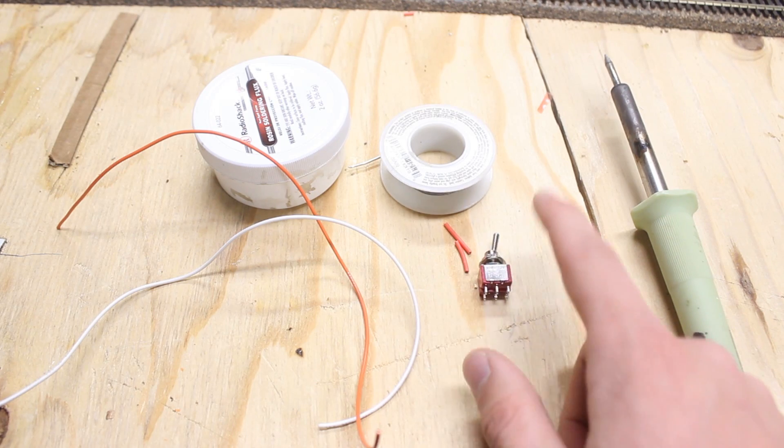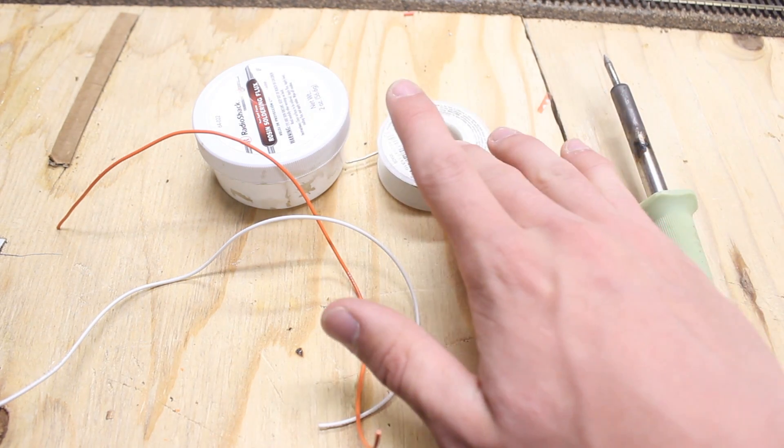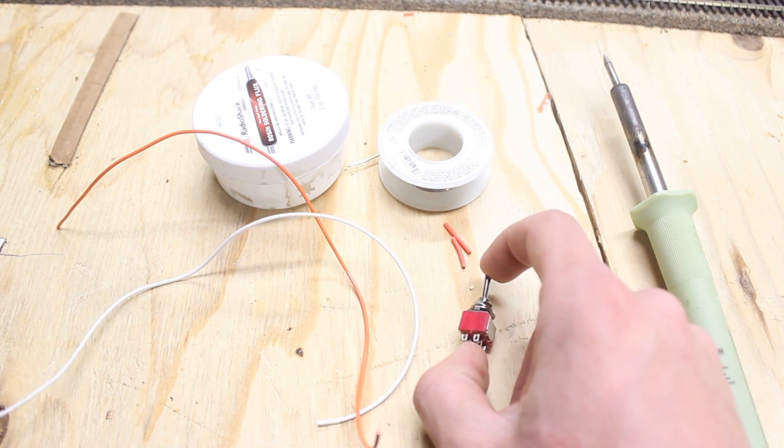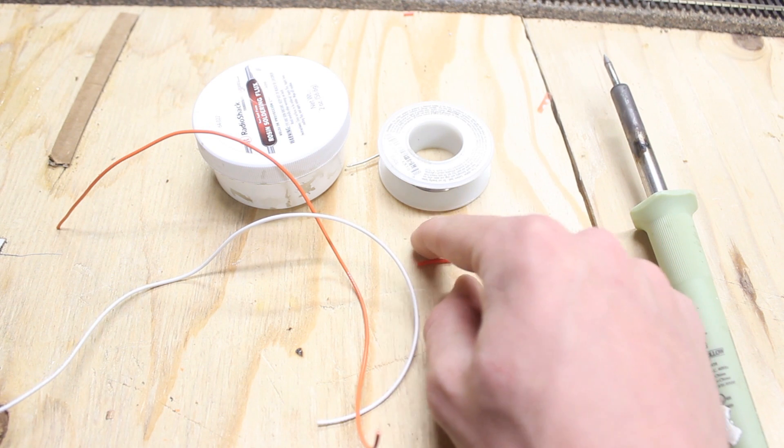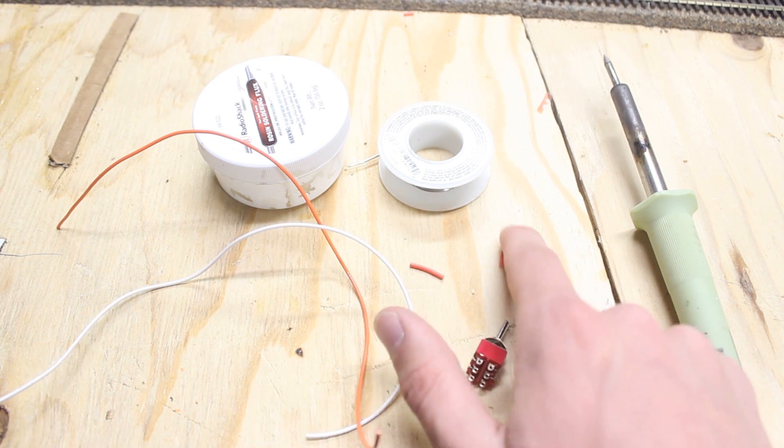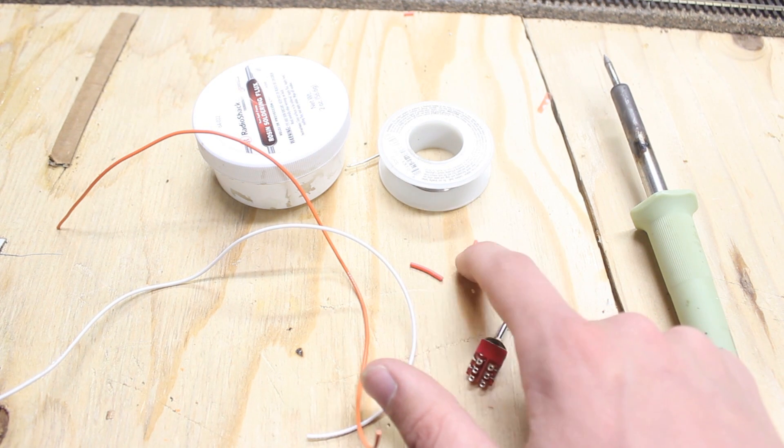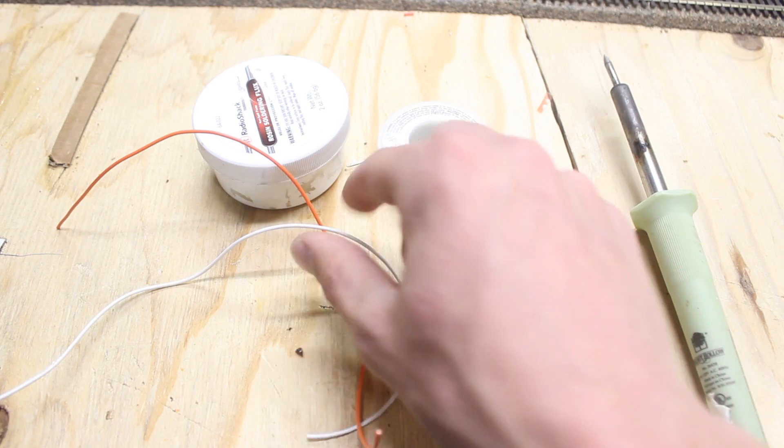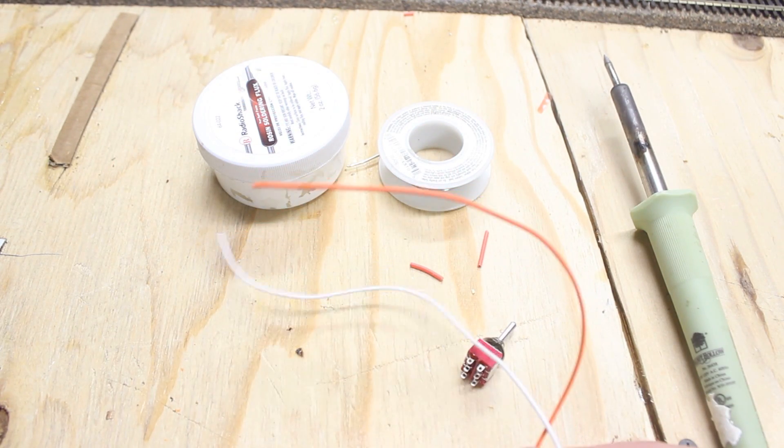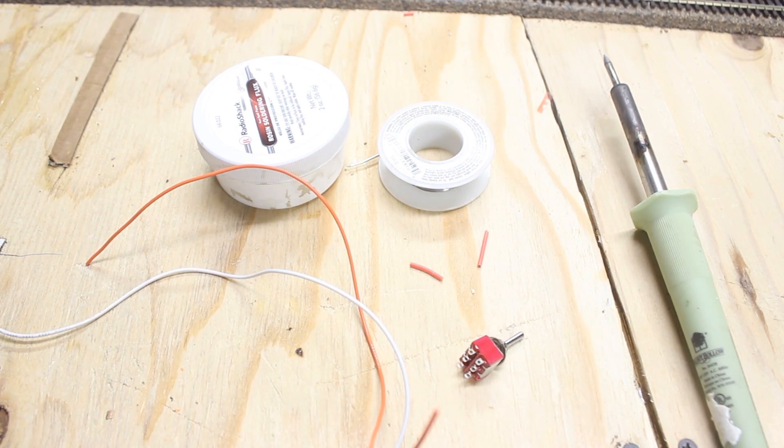So what you're going to need in order to wire this is pretty simple. You're going to need a soldering iron, some solder, some flux, the double pole double throw switch here, two little pieces of insulation—I'm just having these off of a piece of standard gauge solid core wire—and two pieces of wire, preferably different colors. So we'll go ahead and start on how to wire these up.